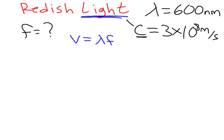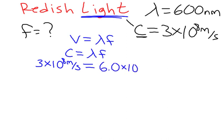Now, plugging into our equation, we get the speed of light is equal to wavelength times frequency. The speed of light, we know, is 3 times 10 to the eighth meters per second. That equals the wavelength, which is 600 nanometers. I'll convert that to meters, 6.0 times 10 to the minus seventh meters, and then that is multiplied by the frequency.